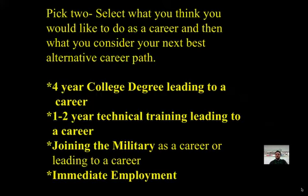Pick two. Select what you think you would like to do as a career, and then what you would consider your next best alternative career path. Here are the choices: a four-year college degree leading into a career, a one to two year technical training leading to a career, joining the military as a career or leading to a career, or immediate employment. You are going to pick two of these and weigh your options between the two.